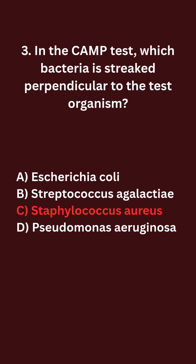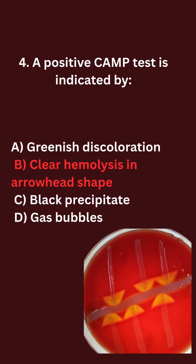In the CAMP test, which bacteria is streaked perpendicular to the test organism? A. Escherichia coli. B. Streptococcus agalactiae. C. Staphylococcus aureus. D. Pseudomonas aeruginosa.